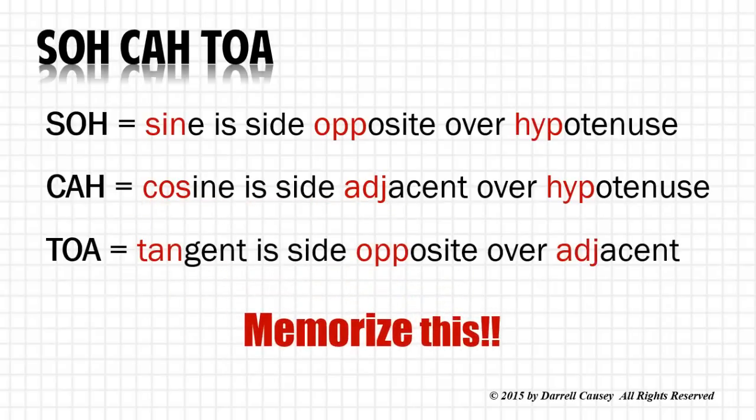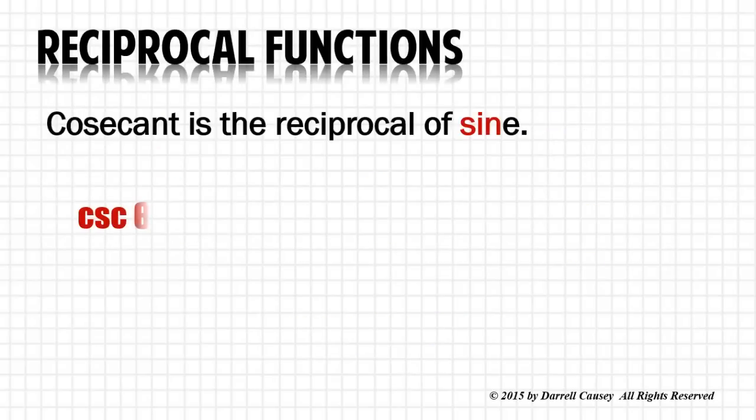Now let's look at the reciprocal functions. Reciprocal just means take it and flip it over. Cosecant θ is just the reciprocal of sine. Flip it over and get r over y.